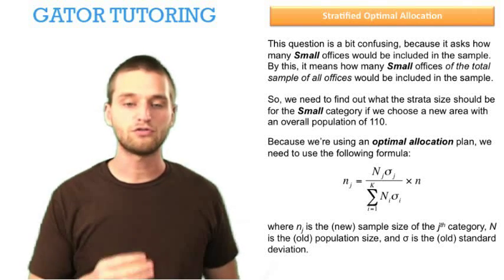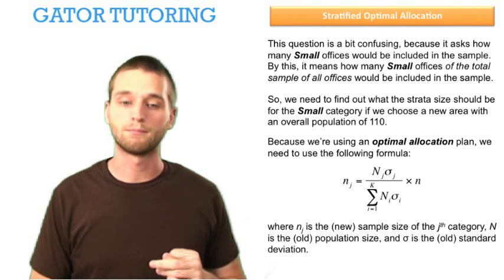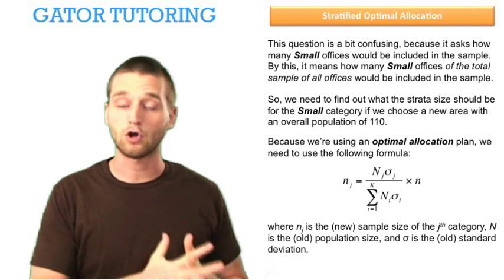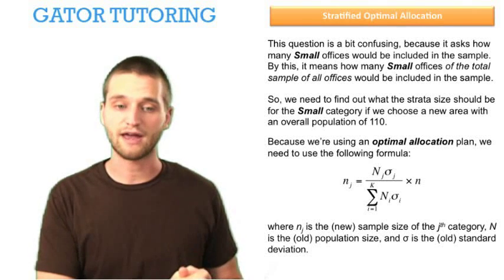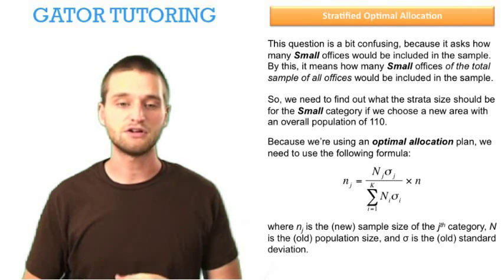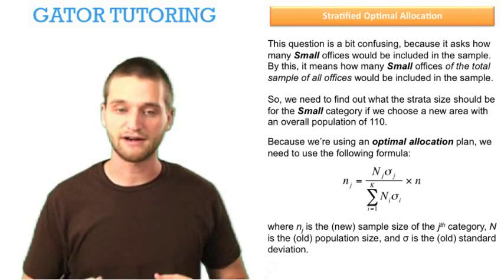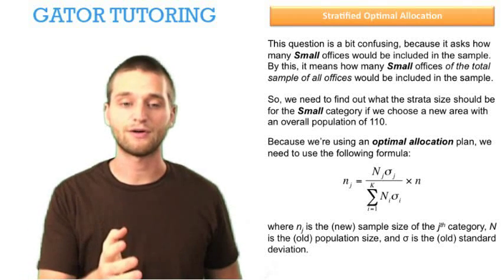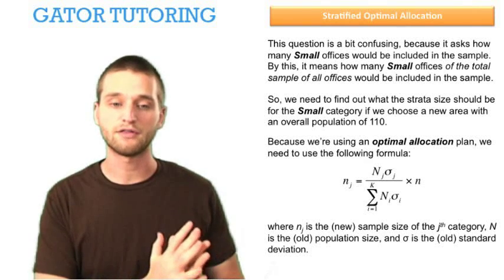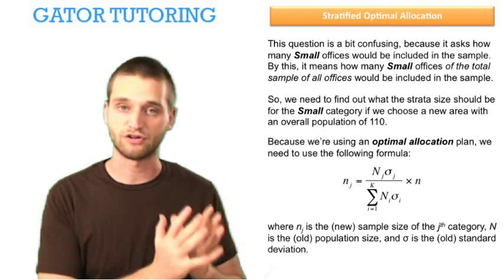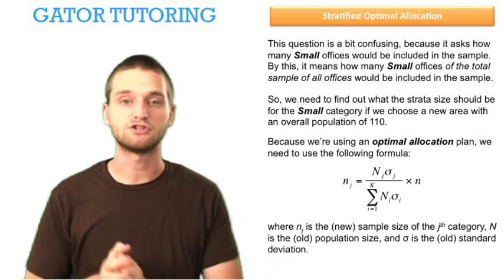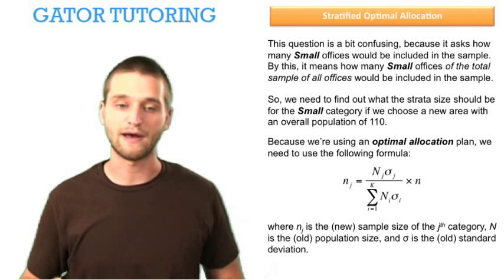So it says the new sample size, n sub j, should be the population size, the old population size of the jth category times the standard deviation of the jth category divided by, and then we see it's the sum of the products of all of the other categories in the old sample, just their size times their standard deviation. You do that for each category, and then you add them up.